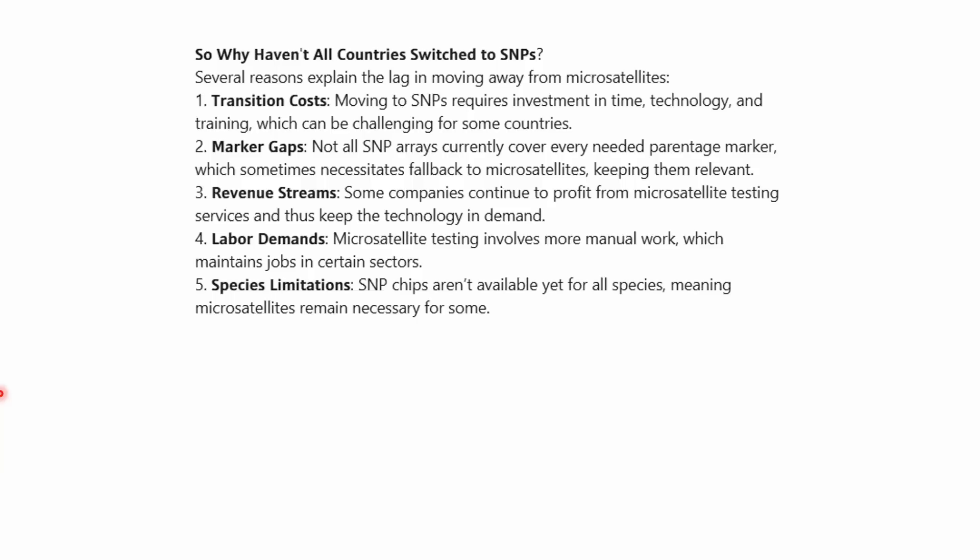Reason five is species limitations — SNP chips aren't available yet for all species, meaning microsatellites remain necessary for some. Here I would also say no. I don't have a total overview of every species, but there are other technologies that are certainly viable — for example, low-coverage sequencing or similar approaches if a SNP chip is not available. And I would be willing to bet that in 2025, there is a SNP chip available for every major livestock species. If not, then that species must be a niche.